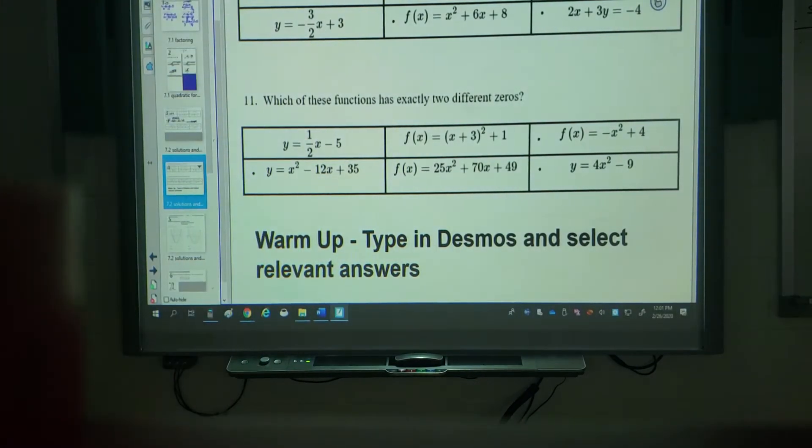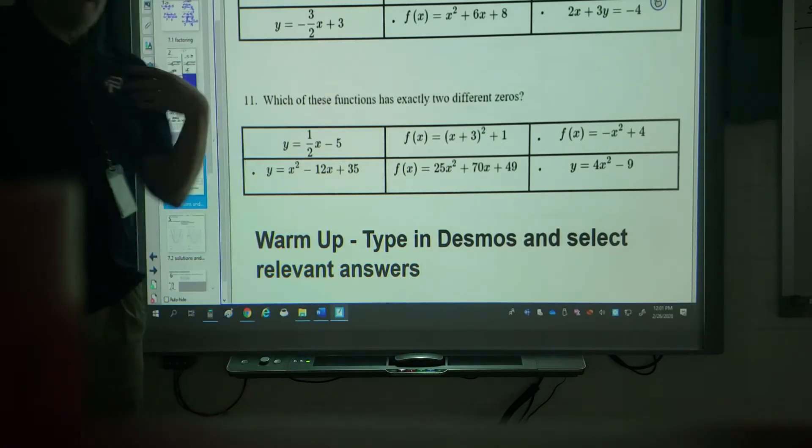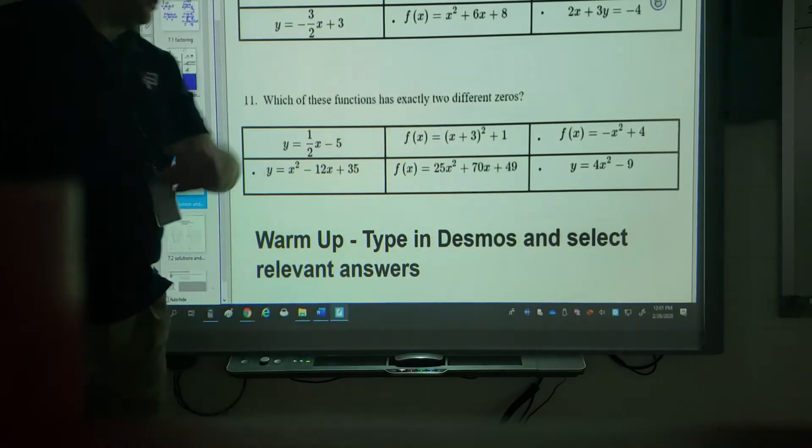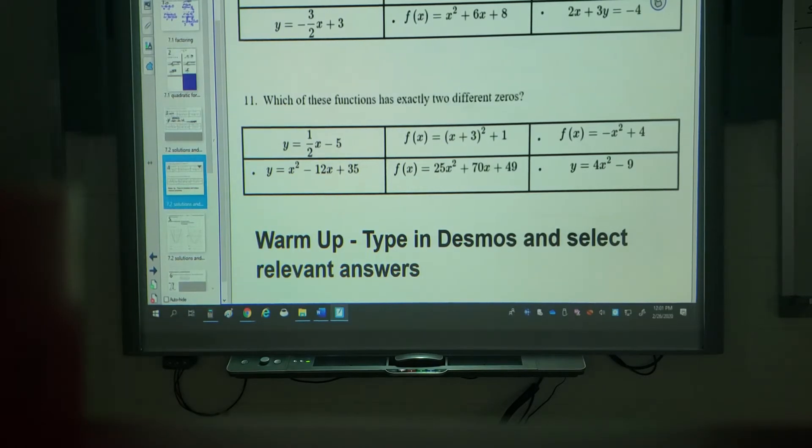The linear one only ever has one zero. This one didn't actually touch the axis at all so it was zero. And this one just touched one time. And this was originally one of our warm-ups as well. So perhaps if you were in class you actually saw these two questions and actually got to practice that.